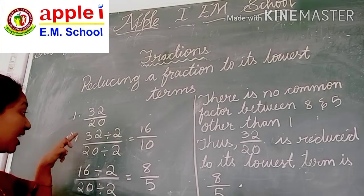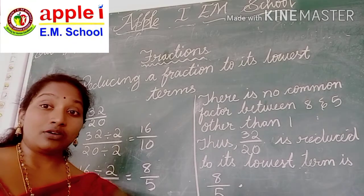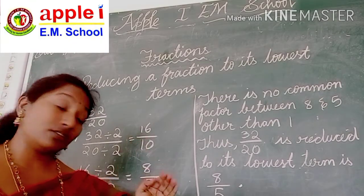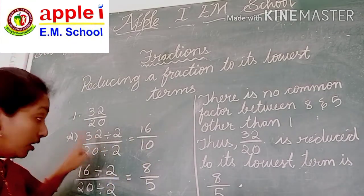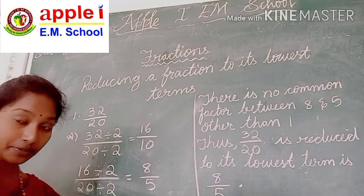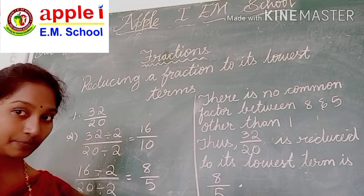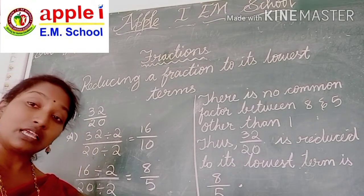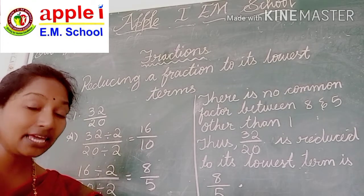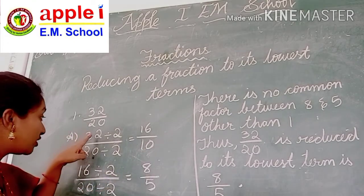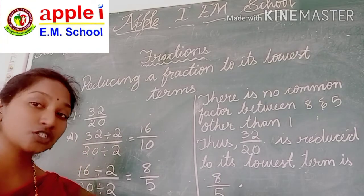First we have to check 32 and 20. See here — 32 is an even number, and 20 is an even number. We have already learnt the divisibility rules. An even number means it is divisible by 2. So both 32 and 20 are divisible by 2.